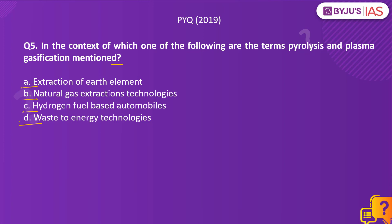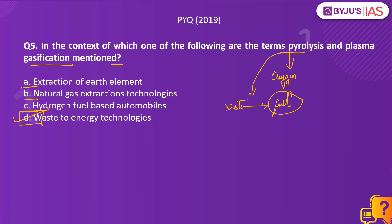The right answer is Option D, waste-to-energy technologies. Pyrolysis involves combustion in the absence of oxygen, or where the material is burnt under a controlled atmosphere of oxygen. The liquid and gas obtained as a product of pyrolysis can be used as fuels — this is one of the technologies used in converting waste into fuel. Plasma gasification, on the other hand, is an extreme thermal process using plasma, which converts organic matter into synthetic gas. It is an emerging technology which can process landfill waste and convert carbon-based materials into fuel. Therefore, the right answer is waste-to-energy technologies.